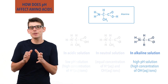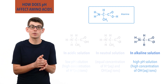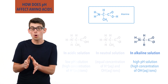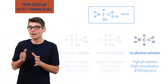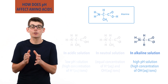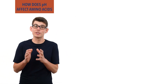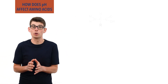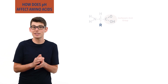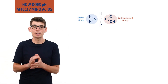The exact pH at which either the carboxylate group of the zwitterion accepts a H+ ion, or the NH3+ group releases a H+ ion, is different for different amino acids. This is because different R-groups affect the acidity of the carboxylic acid group and the basicity of the amine group differently.